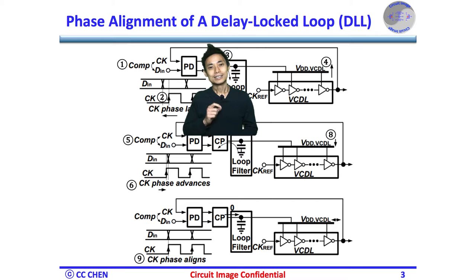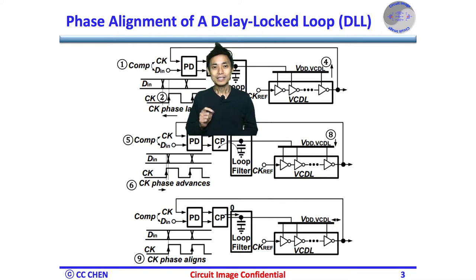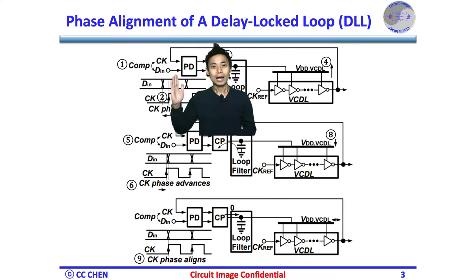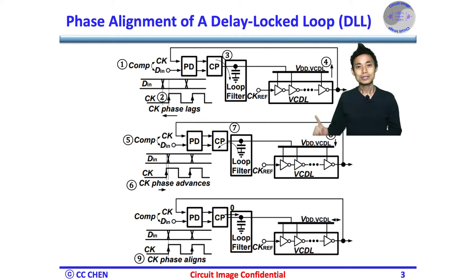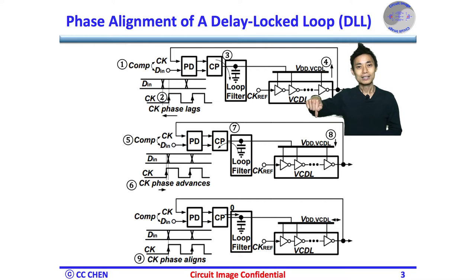For the DLL, its operation is the same as our negative feedback loops. For example, the phases of both input data and output clock would be compared. If the output clock phase lags, then the charge pump will pump more current into the capacitive loop filter to increase the supply voltage of those inverter-based delay lines to reduce the delay, such that the output clock phase will start to advance.